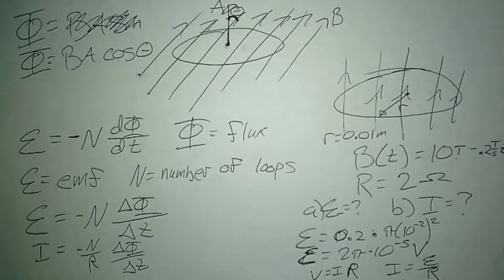So both the EMF and the current are trying to oppose the change in the flux. So what we're going to do is look at this and say, well, my field is decreasing. So it doesn't want to change. It's going to try and generate a current that supports the magnetic field and keeps it the way it is, in this case.